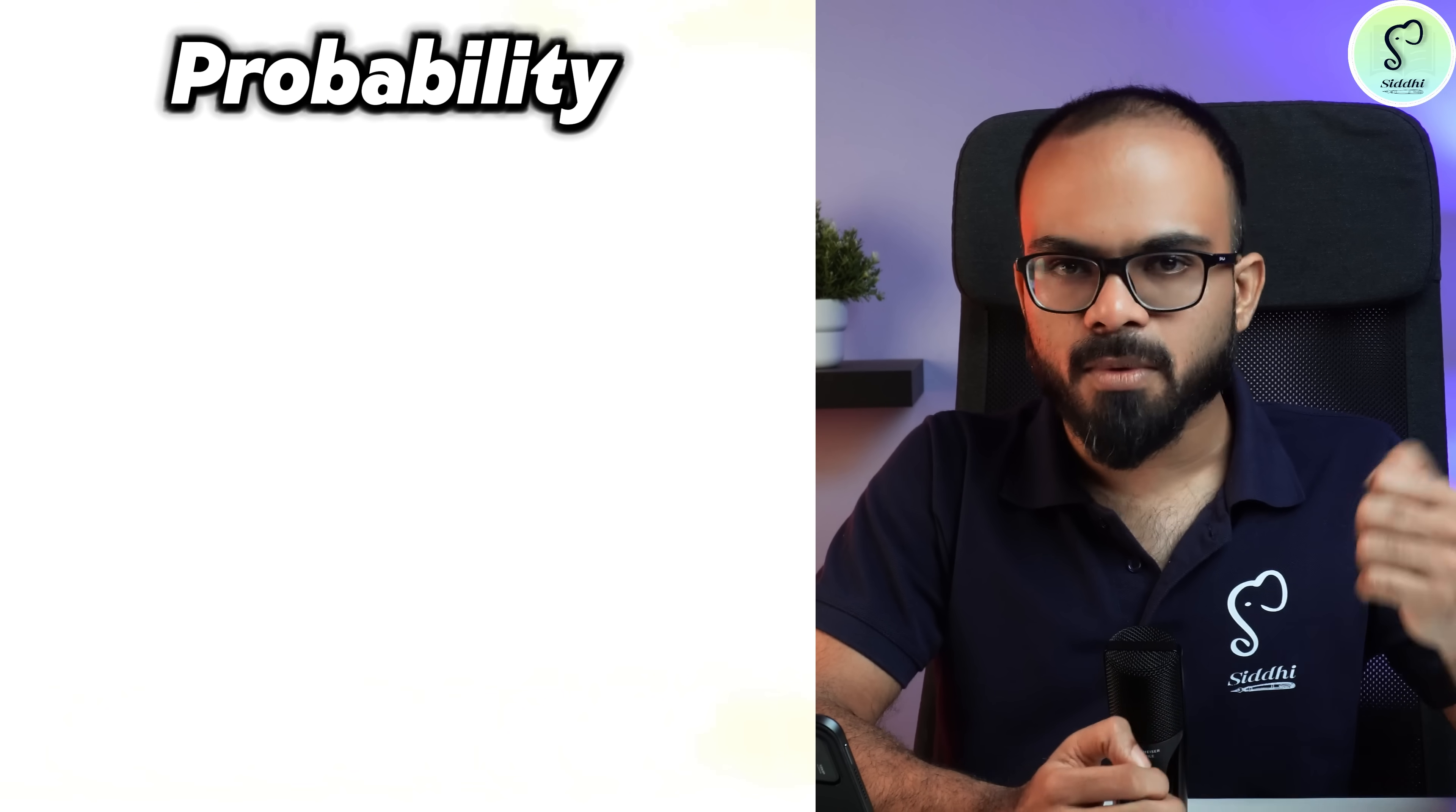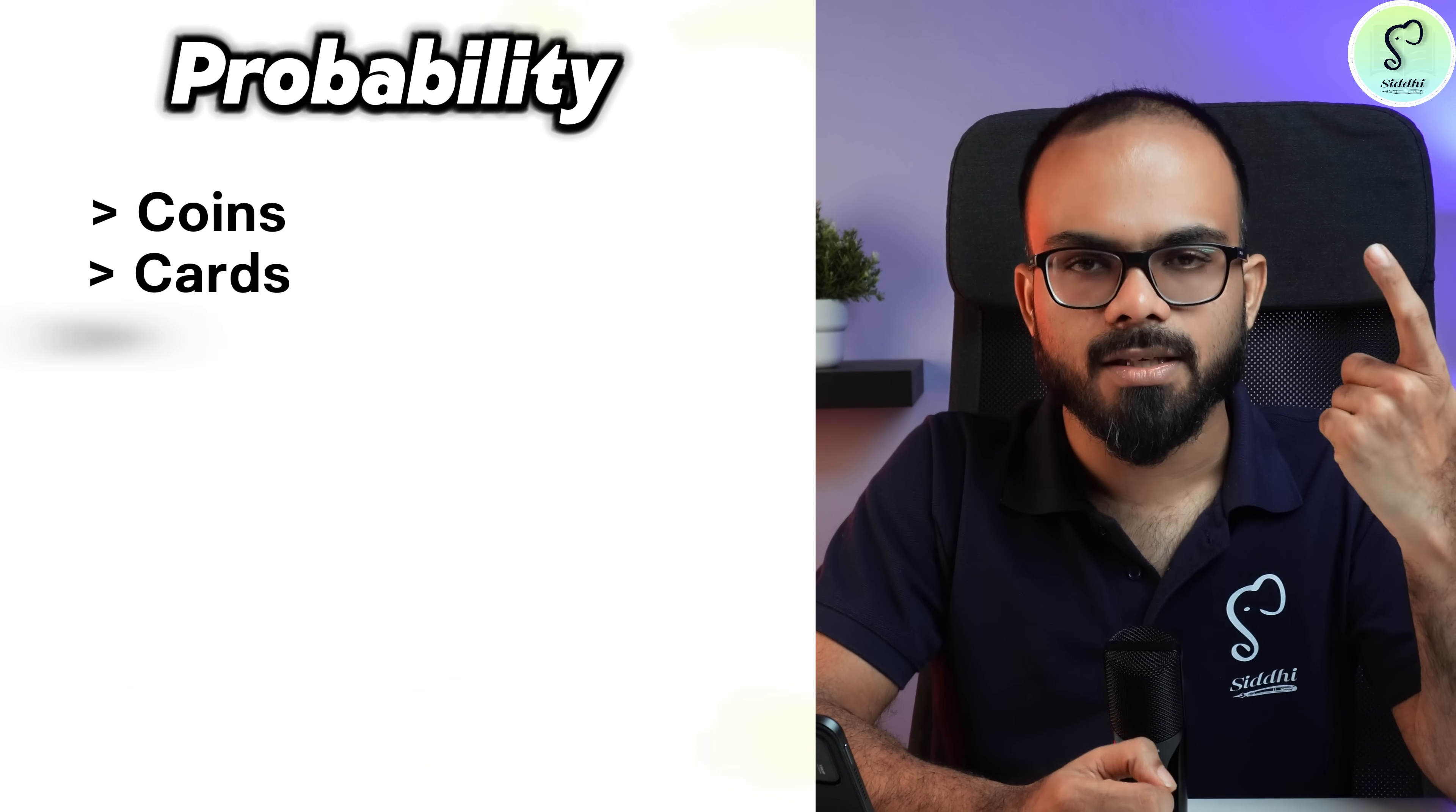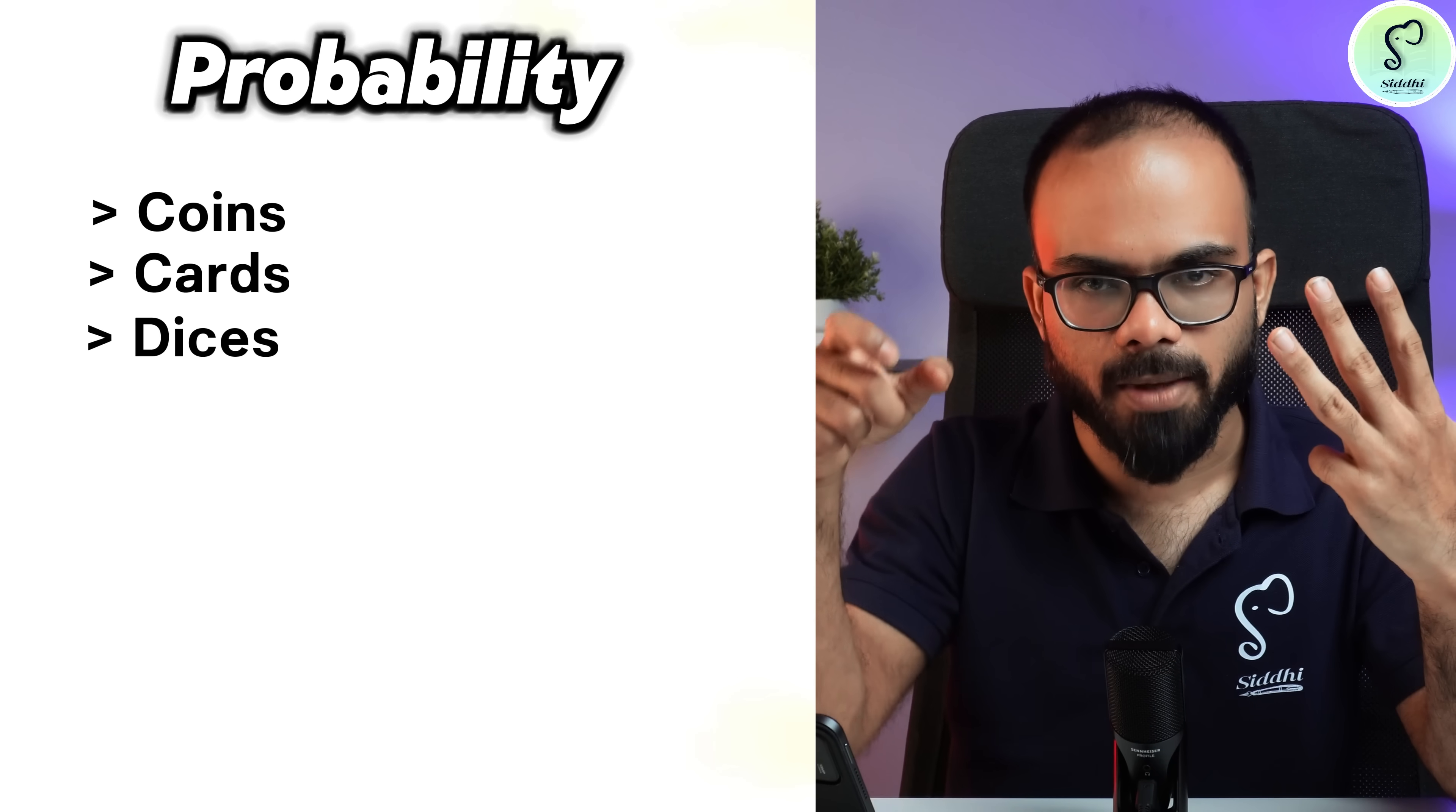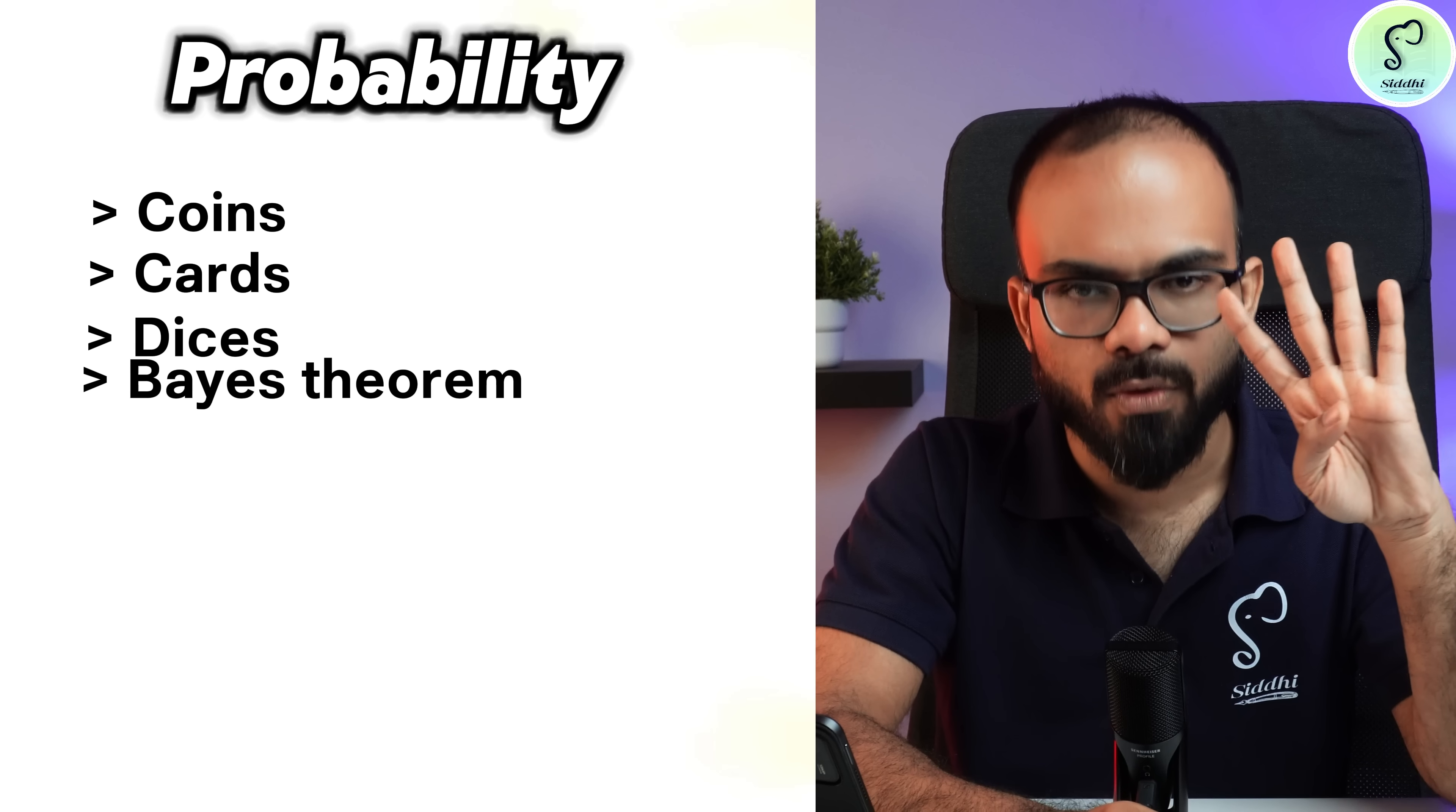Then make sure you do the basics of probability and permutations and combinations. If not the entire chapter, please do at least the following list. With respect to probability: coins, cards, dice, drawing a card out of an entire pack, Bayes' theorem. These four are important.